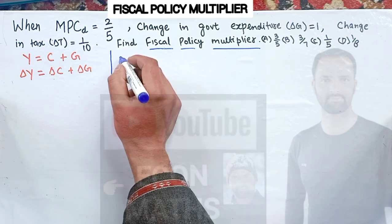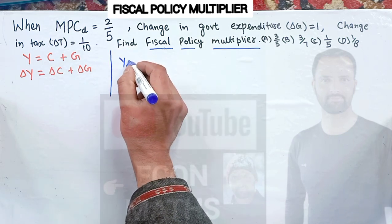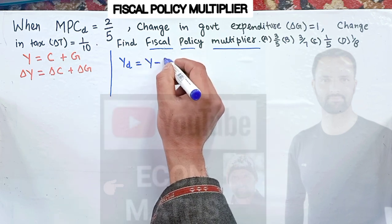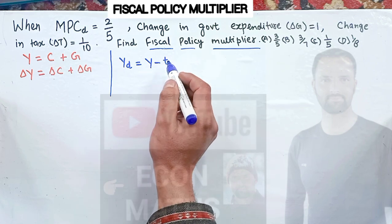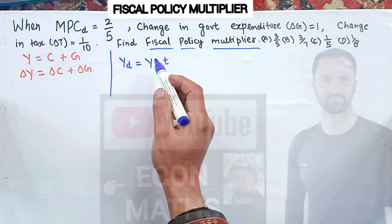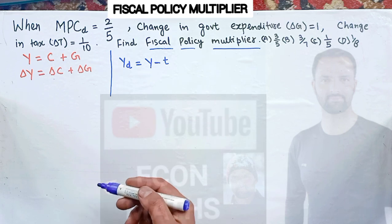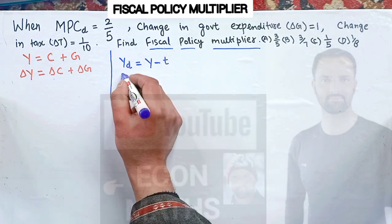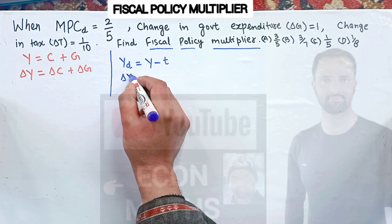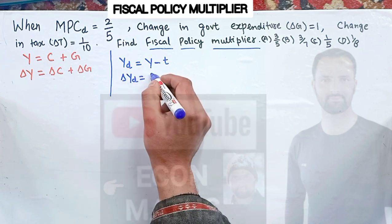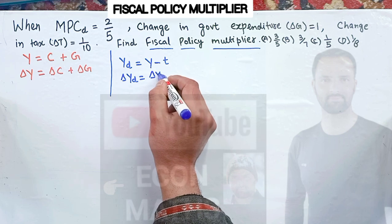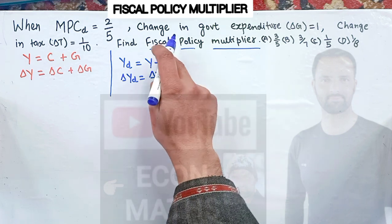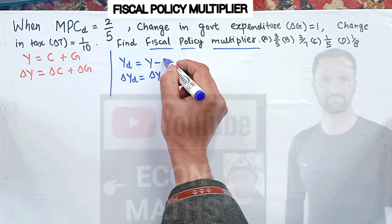We also know that disposable income is total income minus tax. When we subtract the total tax from national income, we get the disposable income. So change in disposable income will be equal to change in total income minus change in tax T, where T is total tax.